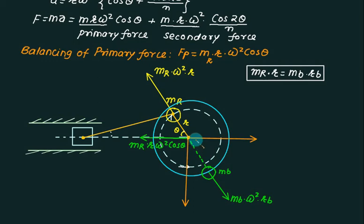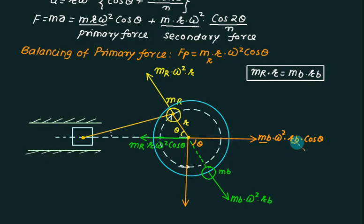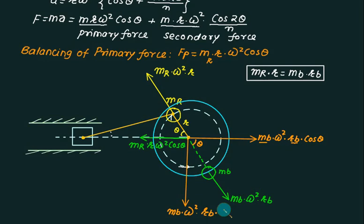This angle is opposite to theta — opposite angles are always equal. So this component is m_b times omega squared times r_b times cos theta. Since m_b times r_b equals m times r, the primary force is 100 percent balanced. However, even though the primary force is balanced, there is an unbalanced force acting perpendicular to the line of stroke. This unbalanced force is m_b times omega squared times r_b times sin theta.